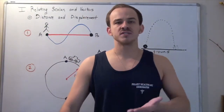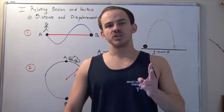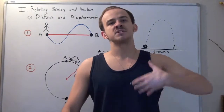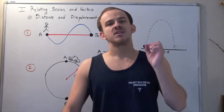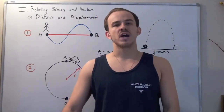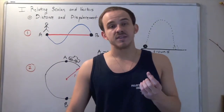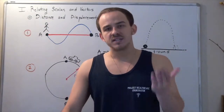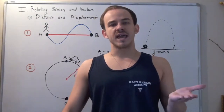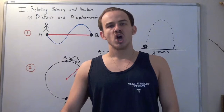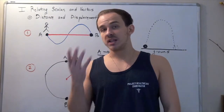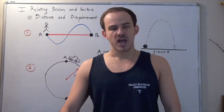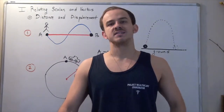In this lecture, we're going to discuss the following two important physical quantities that help us describe the location or position of our object: distance and displacement. Distance is a scalar — it only has magnitude — while displacement is a vector, having both magnitude as well as direction.